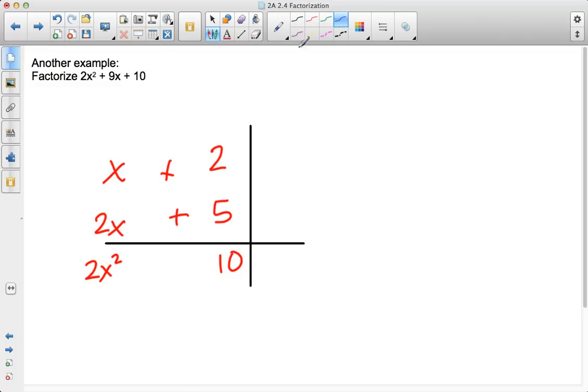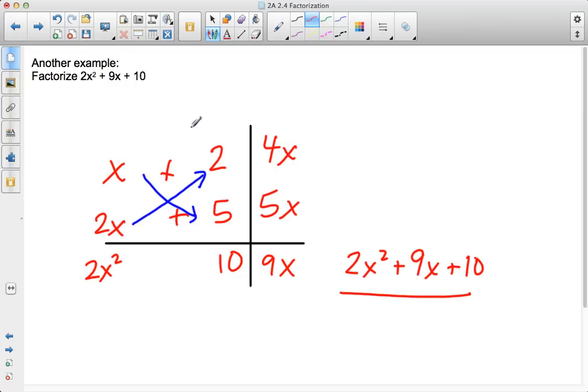So now I go ahead to the next step. I'm going to multiply over here. So 2x times 2 is 4x. And x times 5 is 5x. 4x plus 5x is 9x. So when I combine my terms, I get 2x² + 9x + 10. Which is exactly the same as over here up on the top, 2x² + 9x + 10.